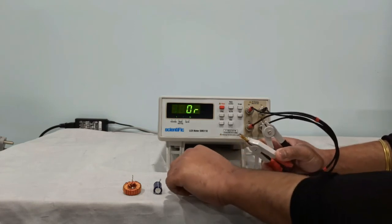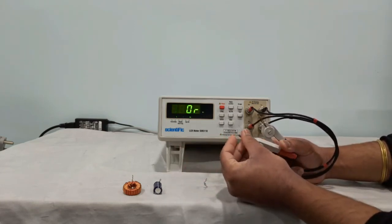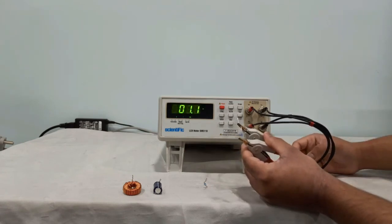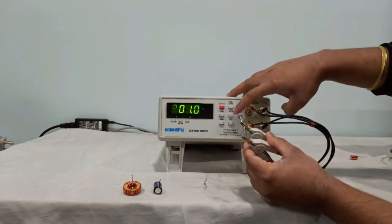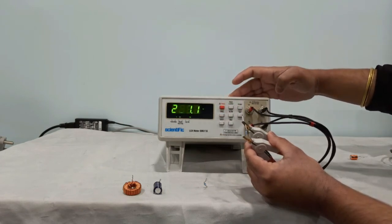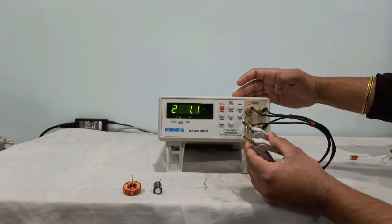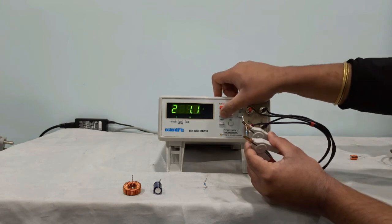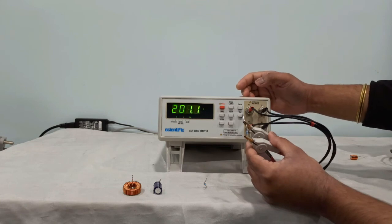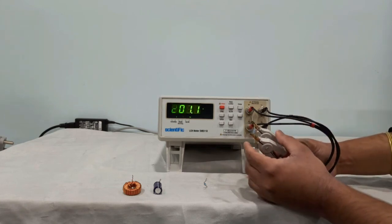Similarly, this is a 200K resistance reading as 201.1. You can change the frequency also. This is a 1KHz reading. To change the frequency, we go to 100Hz. So now it is the same at 100Hz and 1KHz. This is how you can change the frequency and take measurements.